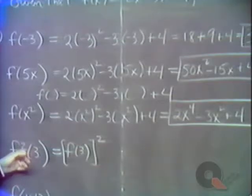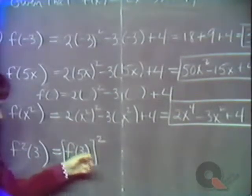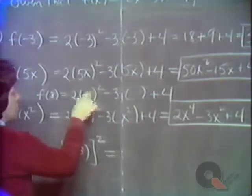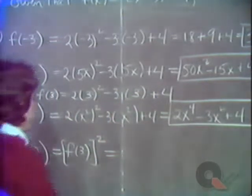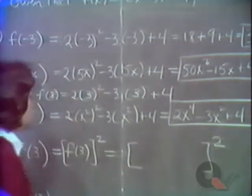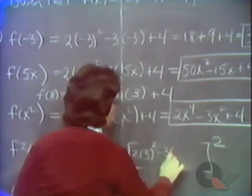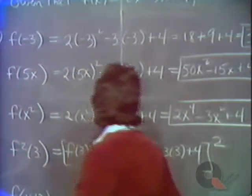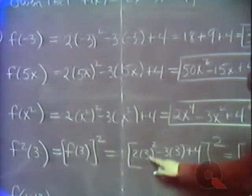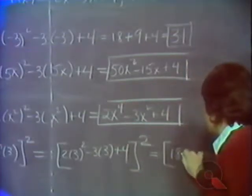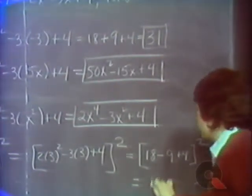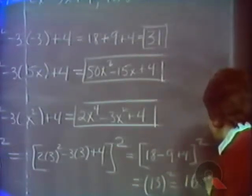When you see a power — an exponent right after the name of the function — it means take the function at this point and raise the whole thing to that power. So it's f of 3, squared. f of 3 is 2 times 3 squared minus 3 times 3 plus 4, and then that whole thing is to be squared. 3 squared is 9, times 2 is 18, minus 9 plus 4 squared. 18 minus 9 is 9, plus 4 is 13, squared gives 169 as a final answer.